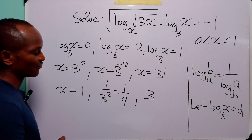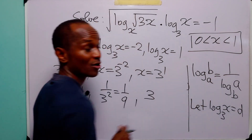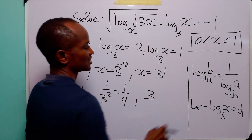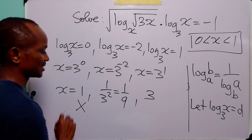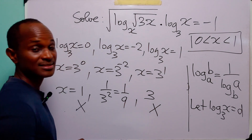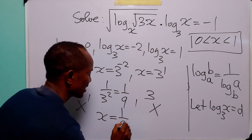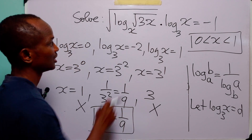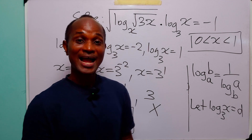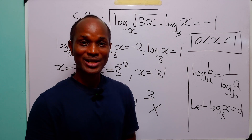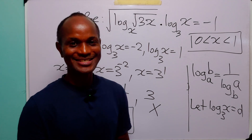We have three values for x, but remember the constraint that x must lie within 0 and 1. So x equals 1 is out and x equals 3 is out, leaving us with x equals 1 over 9 as the solution to this logarithmic equation. With that we come to the end of today's exercise. I hope you learned something new. If you enjoy such content, please subscribe to the channel, leave us a like to support the channel. Thanks for watching and see you in the next one.